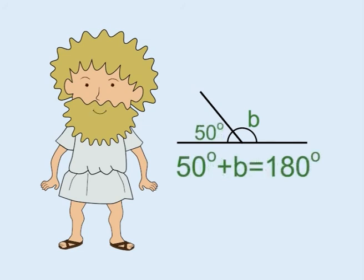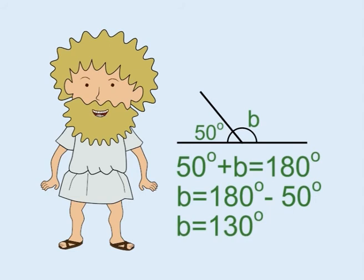In this example, A equals 50 degrees. So B equals 180 minus 50, which equals 130 degrees.